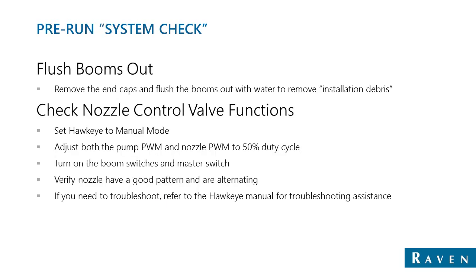Now that we have Hawkeye purchased and installed, there are a few things to take into account when starting up the system for the first time. It's always good to do a pre-run system check. You can flush out your booms to eliminate any debris that could clog the tips. To do a boom flush, set the Hawkeye system to manual mode, increase the pump PWM and nozzle PWM up to 50% or desired level, and turn on the boom master switch and boom switch. Then go back and inspect the boom — make sure none of the nozzle tips are plugged and everything is functioning as it should.